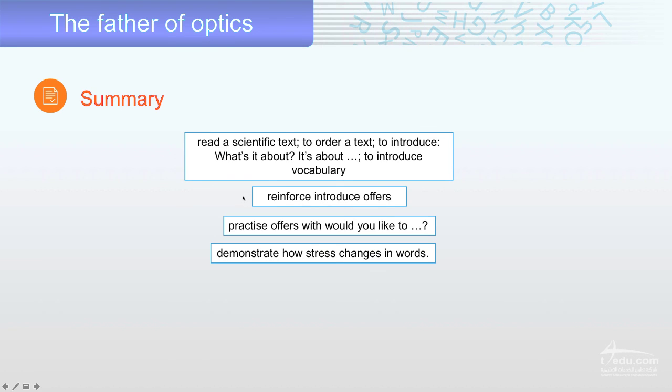Okay, in the end of our class, we just took a lot of very important scientific texts about Ibn al-Haytham. Read about them. We make an offer using would, like, to. Then we demonstrate how stress changes in words. And align the stress zones. So, practice, practice, practice. That is the key of success. Goodbye.